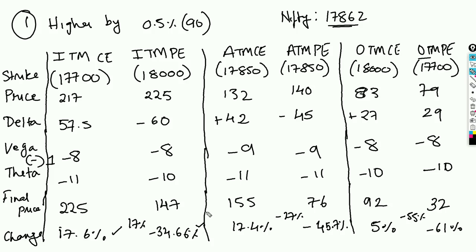Understanding Greeks will help you understand why exactly option premiums sometimes behave the way they do. In this video, we learned the basics of Greeks and how they impact option prices, and how all Greeks act together to help understand the change in option prices for a particular move in the underlying. Once you know that, it becomes easy to decide which strikes to choose based on where you think the market is headed. I hope you've liked this video — do not forget to hit the like button, share, and subscribe to Optionables. Thank you so much for joining.